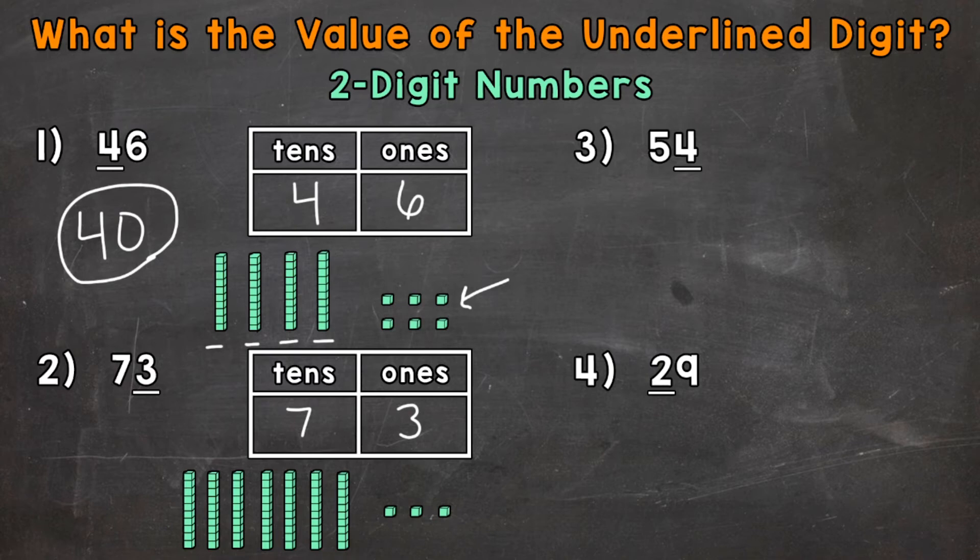So we need to determine the value or worth of that 3. Well, the 3 is in the ones place. So that means it's representing 3 ones: 1, 2, 3. Therefore, that 3 has a value or worth of 3.